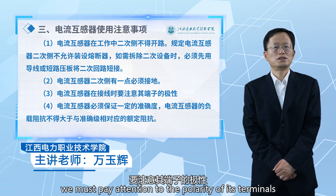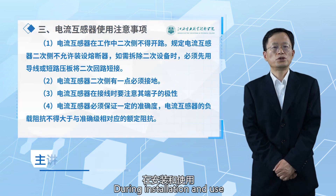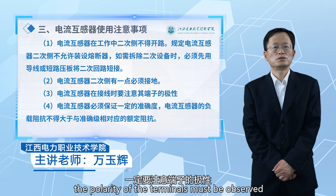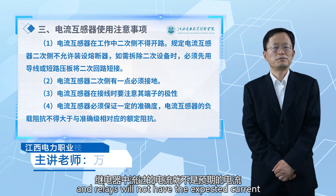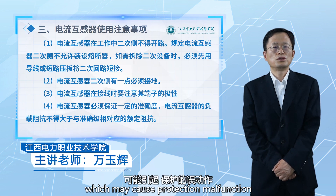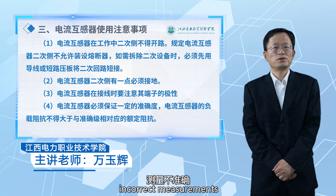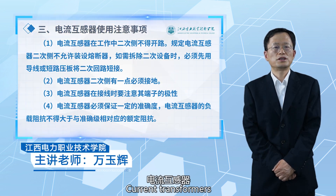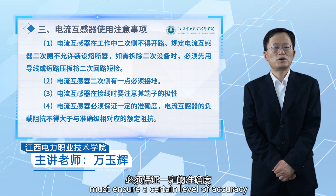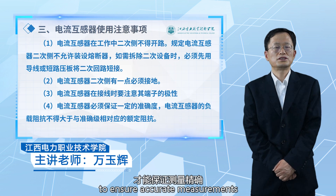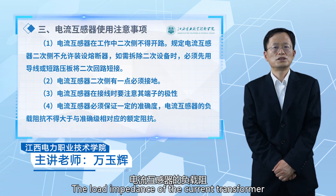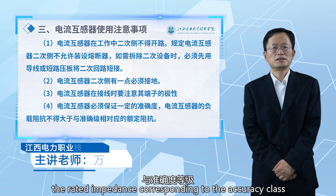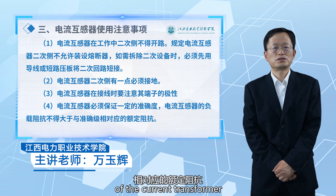During wiring of current transformers, attention must be paid to the polarity of the terminals. If polarity is not observed, the secondary instruments and relays will not receive the expected current, which may cause protection malfunction, incorrect measurement, or damage to the instrument. Current transformers must also ensure a certain level of accuracy for accurate measurement and proper operation of protection devices. The load impedance must not exceed the rated impedance corresponding to the accuracy class of the transformer.